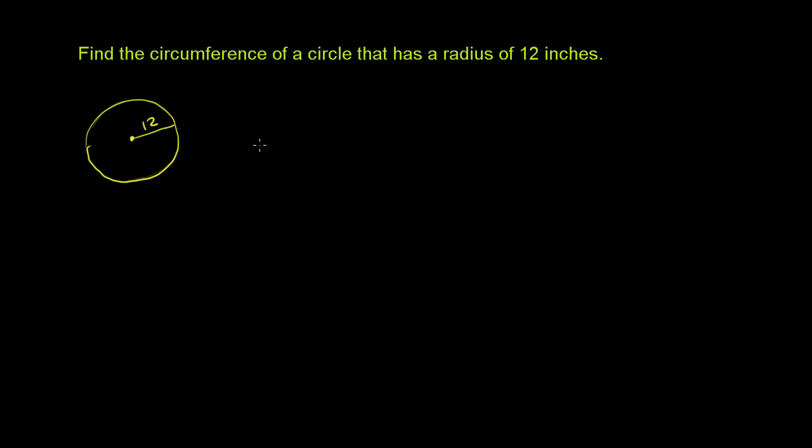So the first thing to realize is that there's a very special number called pi that we use when we deal with circles. And pi is actually defined as the ratio between the circumference and the diameter of a circle. This is one of the ways that one can define pi.